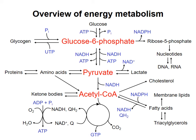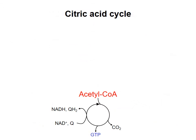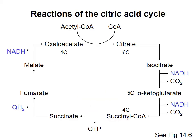In the last video I described the conversion of pyruvate to acetyl-CoA. In this video I will talk about oxidation of the two acetyl carbons of acetyl-CoA to carbon dioxide in the citric acid cycle. The reactions of the citric acid cycle are shown here. You do not need to memorize them, but I will go through them briefly so that you have a sense of what's going on.